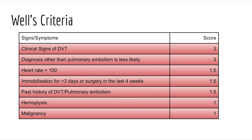Heart rate more than 100, that is tachycardia, gets a score of 1.5. Immobilization for more than three days or surgery in the last four weeks gets a score of 1.5. Past history of DVT or pulmonary embolism also gets a score of 1.5. Hemoptysis and malignancy each get a score of 1.